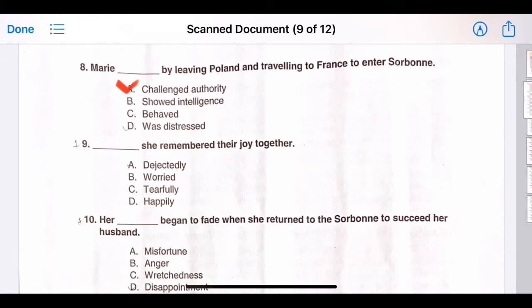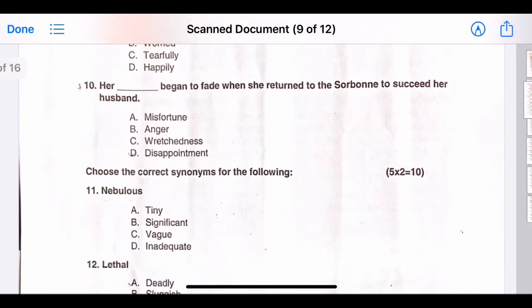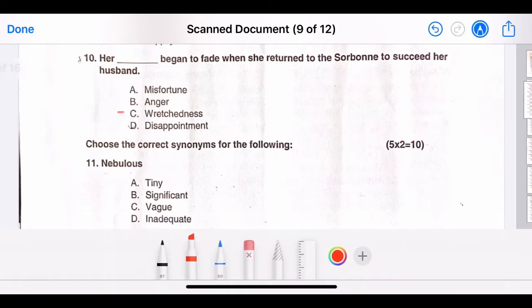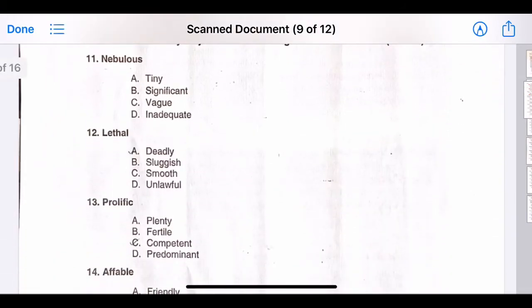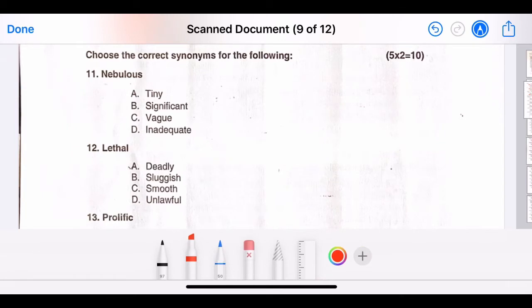Nine, thus she remembered their joy together. The correct answer is option A, dejectedly. Ten, her blank began to fade when she returned to the Sorbonne to succeed her husband. The correct answer is option C, wretchedness. Choose the correct synonyms for the following. The eleventh question is nebulous. The correct answer is option C, that is vague.